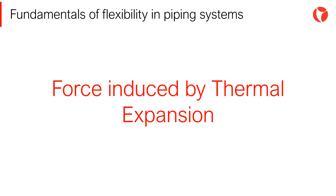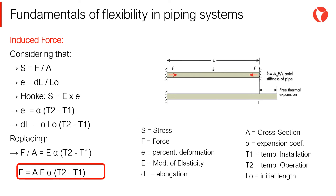When the system can freely expand at the ends of intermediate sections, this phenomenon does not represent any problem. However, when there are movement restrictions, stresses of considerable magnitude are induced in the piping system. As shown on the screen, it could be concluded that the force induced in the pipe depends fundamentally on its cross-sectional area and the difference in temperature.